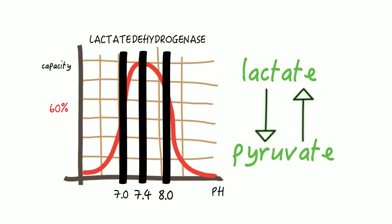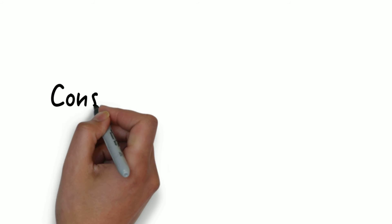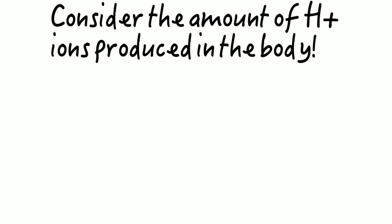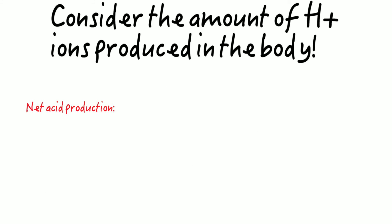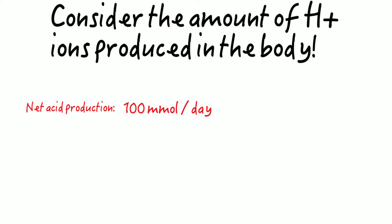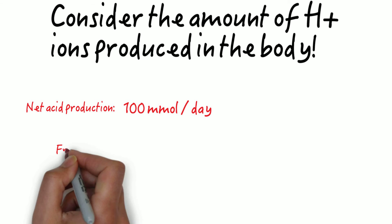And the same holds true for other proteins and enzymes as well. OK, so we said the body needs to maintain the pH in a very, very narrow range in order for the enzymes in the body to work. This capacity is really, really impressive, especially if you consider the amount of hydrogen ions produced in the body. The net acid production in the body is in the range of 100 millimoles per day.